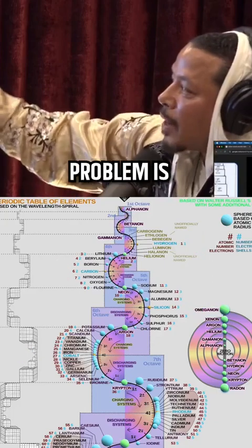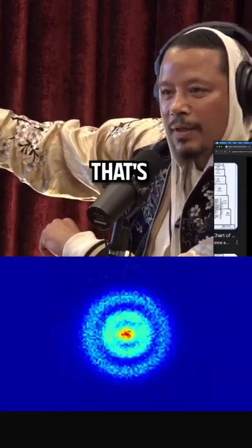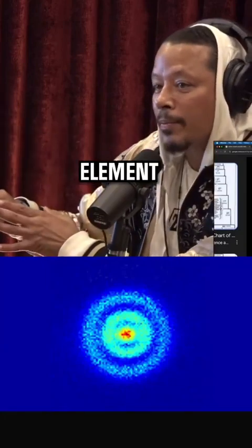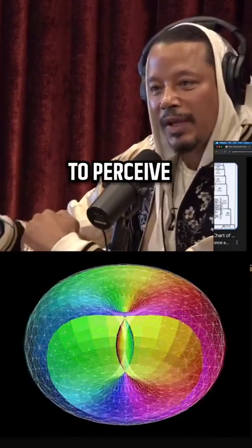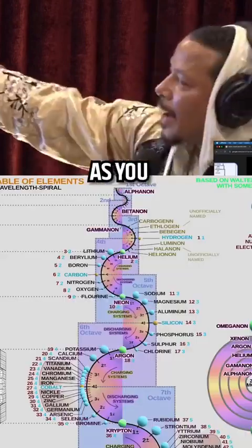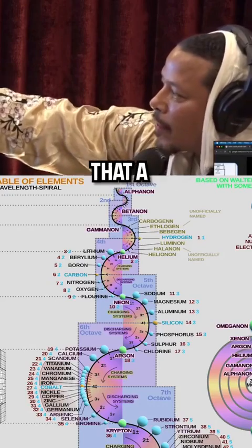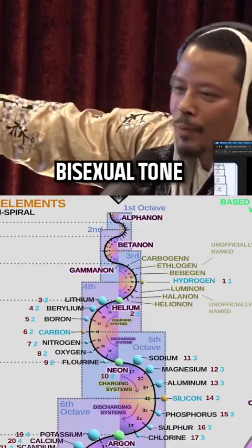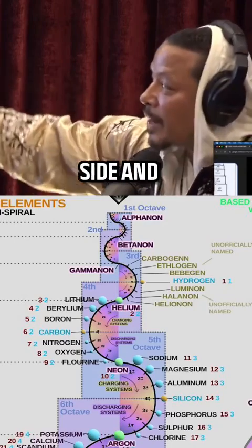Now the problem is the first thing we're able to perceive is hydrogen. That's the first visible element because before it is too dense for us to perceive. As you reach into the next octave, the carbon octave, they call that a bisexual tone because carbon has two tones to it.